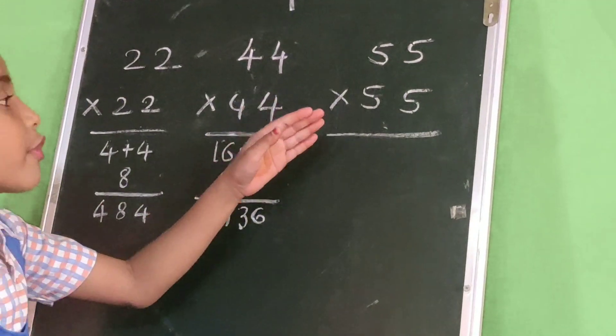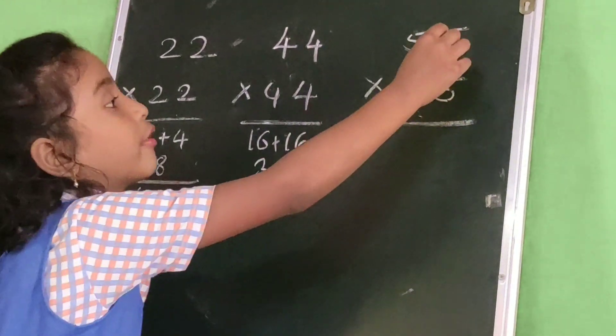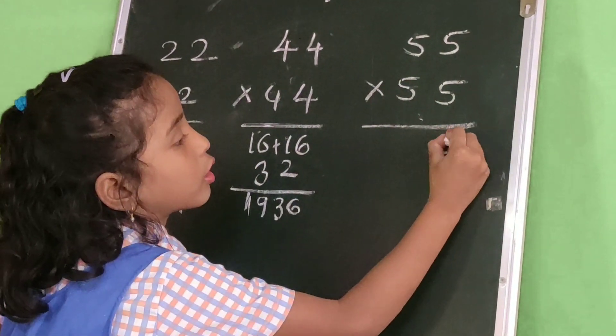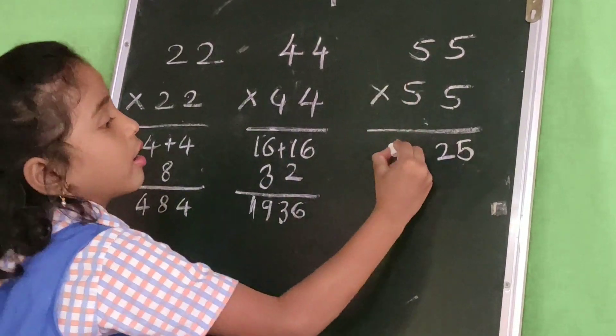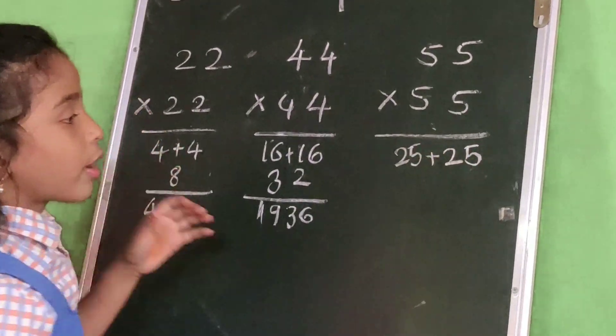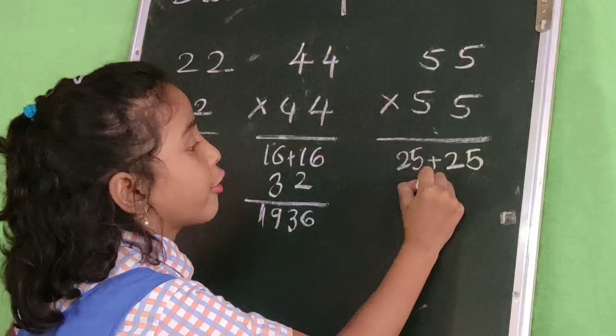Then next problem: 55 times 55. 5 times 5 is 25, 5 times 5 is 25. 25 plus 25 equals 50.